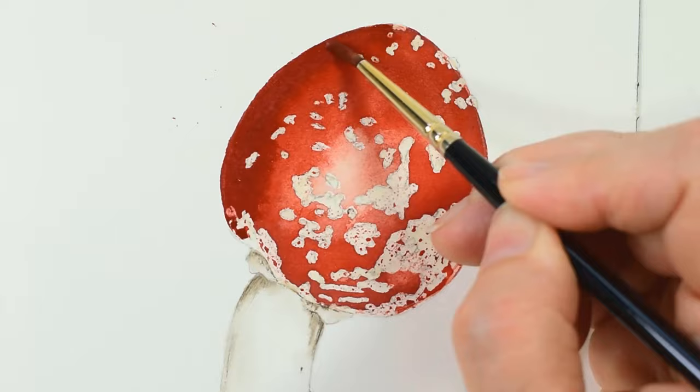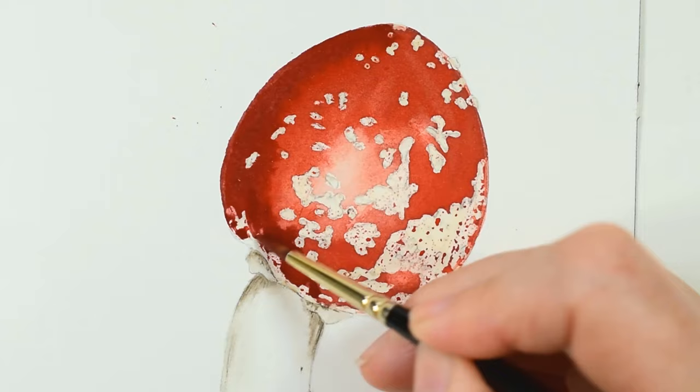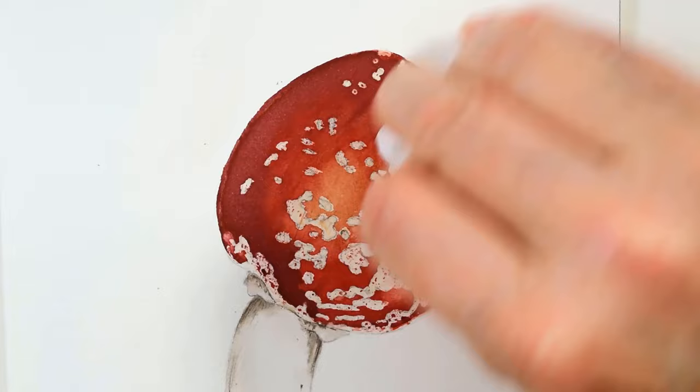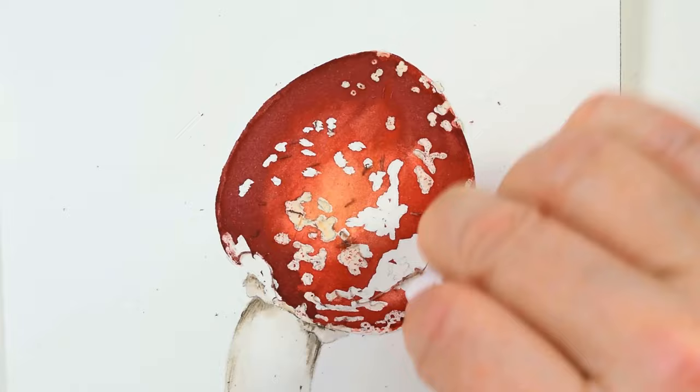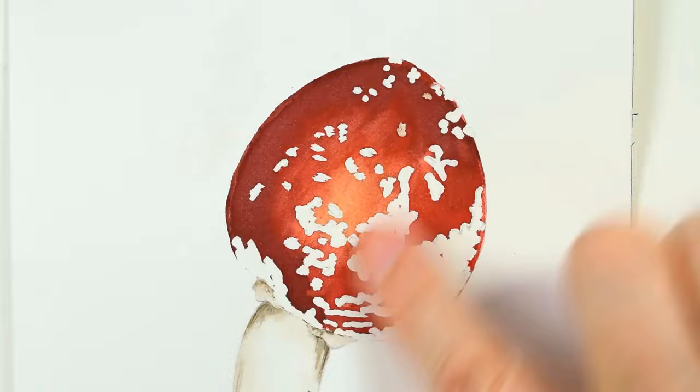Once I'm happy with my red area, I let it dry completely again. And then come in either with a clean fingertip or an eraser and remove all of the masking fluid. And I'm just rubbing my finger over the paper to make sure that it's all completely gone.